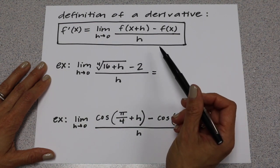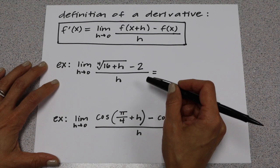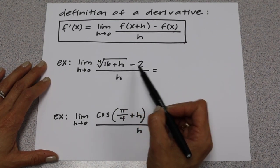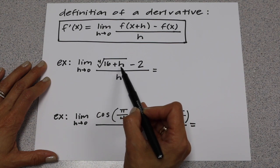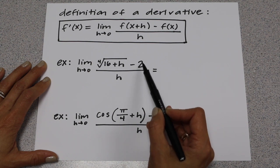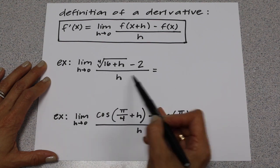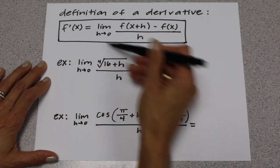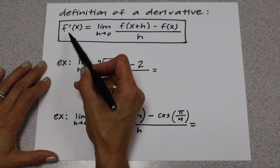The biggest thing is recognizing that the problem requires using this formula. In the first example, we have the limit as h goes to 0 of the 4th root of 16 plus h, minus 2, all over h. In the numerator, the 4th root of 16 plus h is your f of x plus h. The minus 2 is your minus f of x, and it's all over h. So this expression is equal to f prime of x — we're given something in this form and saying it equals f prime of x.